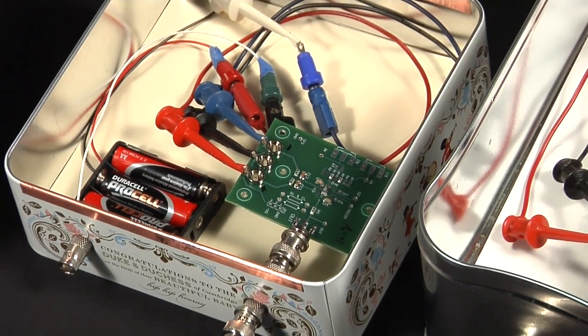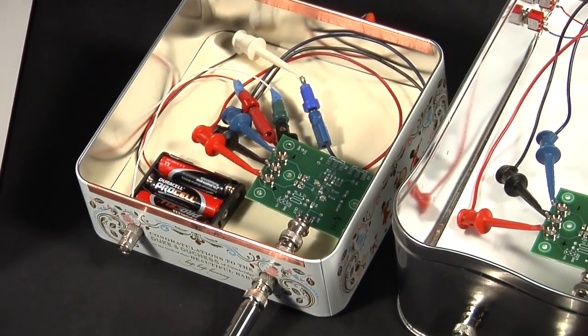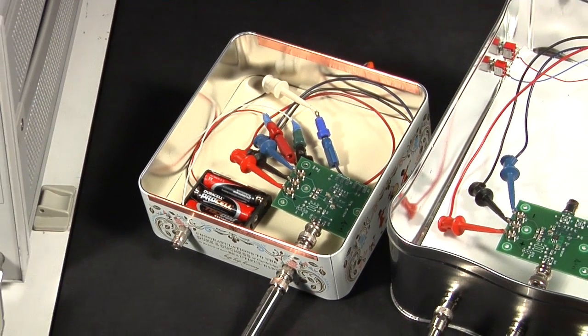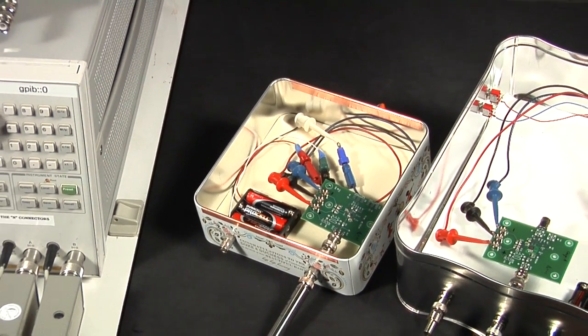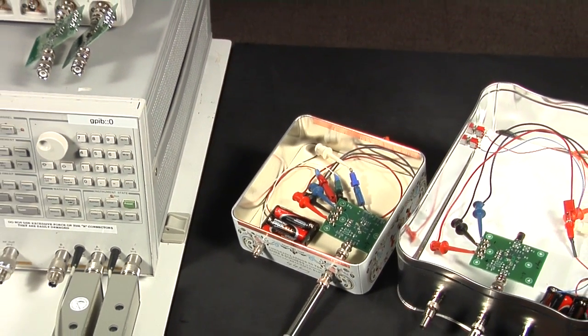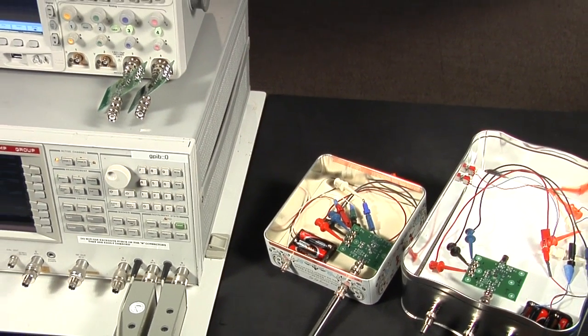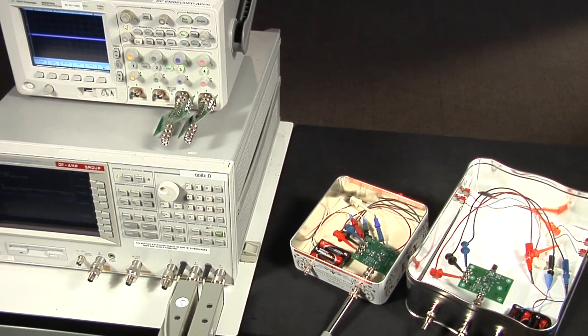In order to observe this artifact, the LTC2057 and a competitive zero-drift amplifier have been configured as unity gain buffers with their inputs grounded. The output spectrums will reveal the amount of ripple that is produced in each device.